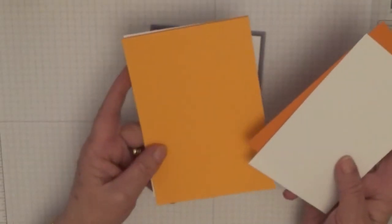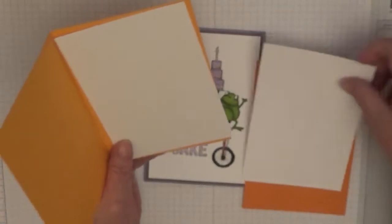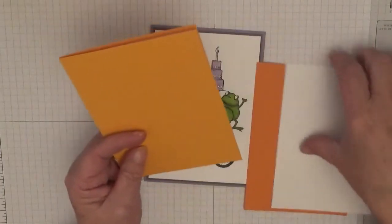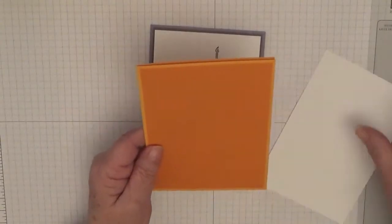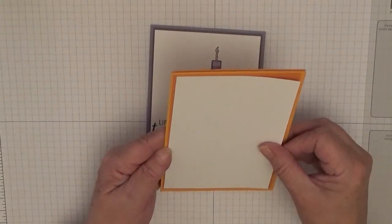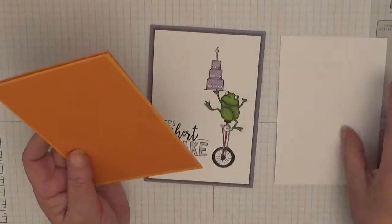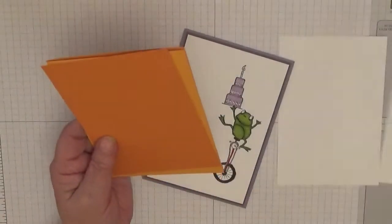Now I'm going to use Mango Melody and Pumpkin Pie. You need a card base of 8 and 1/4 by 5 and 7/8, a piece of Whisper White measuring 5 and 5/8 by 3 and 7/8, a piece of Pumpkin Pie measuring 5 and 5/8 by 3 and 7/8, and a piece of white cardstock at 5 and 1/2 by 3 and 3/4. We're going to stamp on that.